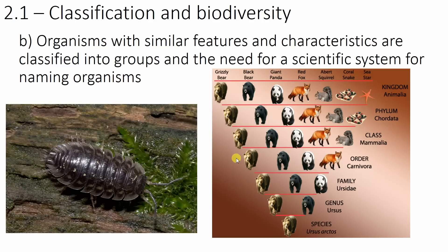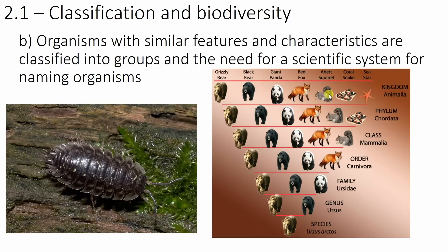Hi guys and welcome back to Ms. Clark Does Science. Last time we started the new topic 2.1 year 11 science of classification and biodiversity. We began to talk about the basic classification of animals and plants. Today we're going to be moving on in a little bit more detail to point B, which states organisms with similar features and characteristics are classified into groups, and the need for a scientific system for naming organisms. We're also going to talk about how we get from a whole array of animals or plants down to individual species at the bottom.